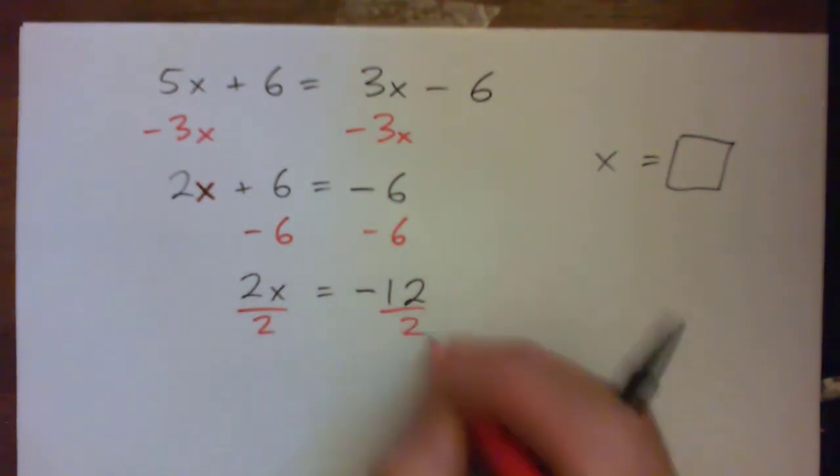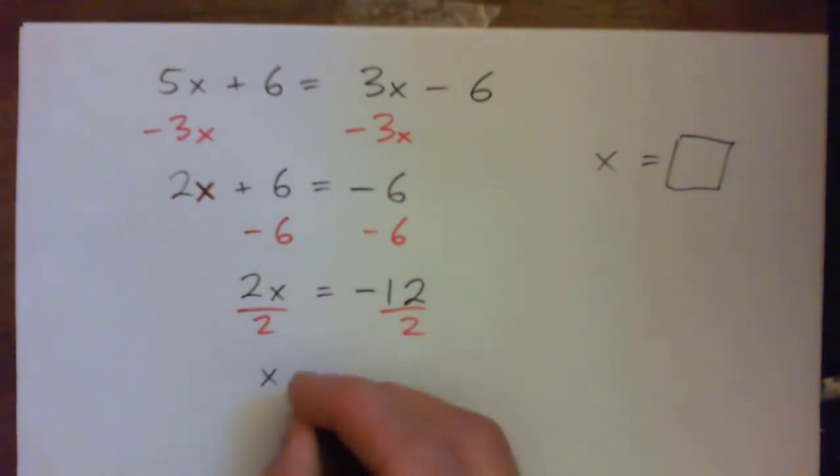And then we just divide by 2. And x is? Negative 6. Very good.